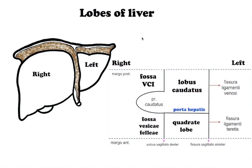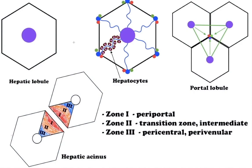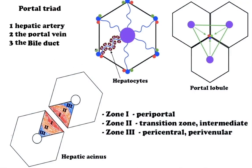Microscopically, each liver lobe is made up of hepatic lobules. The hepatic lobule is a polygonal histological unit of the liver consisting of masses of liver cells arranged around a central vein. The lobules are roughly hexagonal and consist of plates of hepatocytes and sinusoids radiating from a central vein towards an imaginary perimeter of interlobular portal triads. A distinctive component of a lobule is the portal triad, found at each of the lobule's corners, consisting of the hepatic artery, the portal vein, and the bile duct.